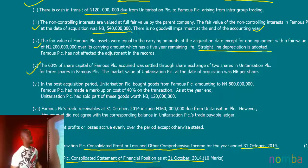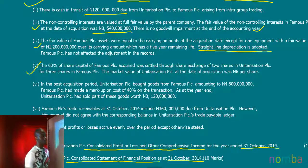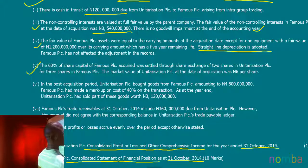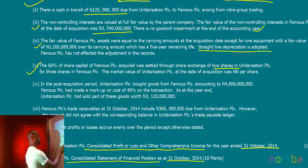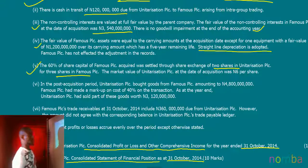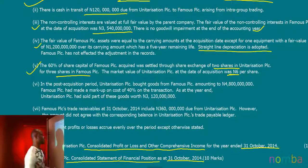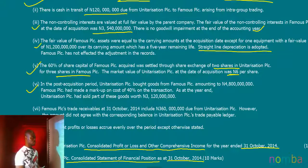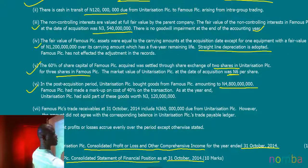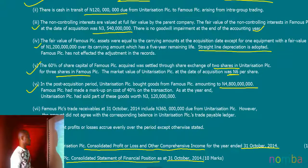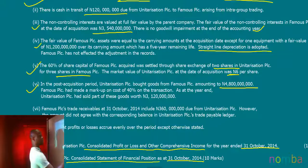Additional information five states that the 60% share capital of Famous PLC acquired was settled through a share exchange — two shares in Unitarization PLC for three shares in Famous PLC — with the market value of Unitarization PLC at the date of acquisition being 6,000 per share. Additional information six states that in the post-acquisition period, Unitarization PLC bought goods from Famous PLC amounting to 4,800 million, and Famous PLC had made a markup on cost of 40% on the transaction.